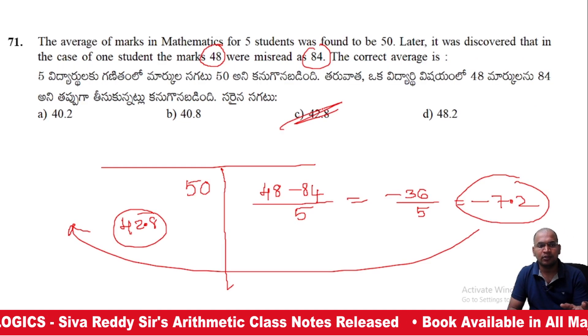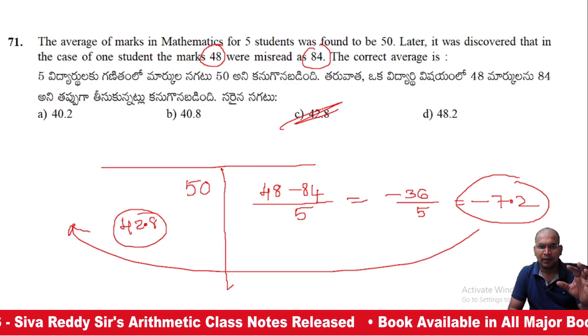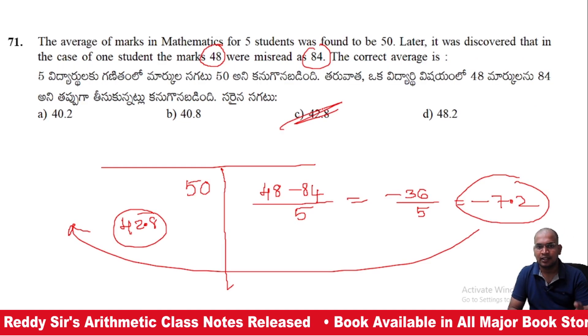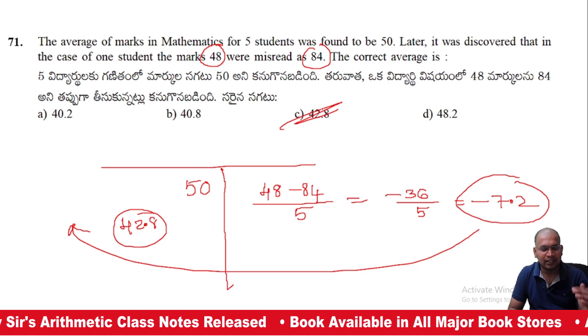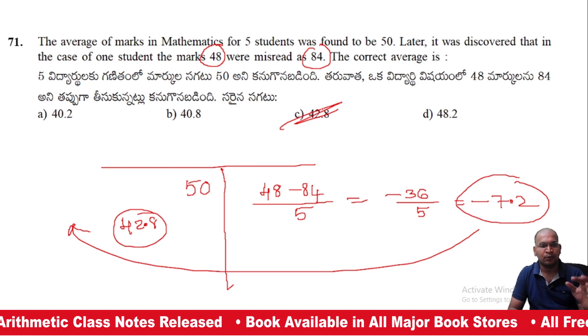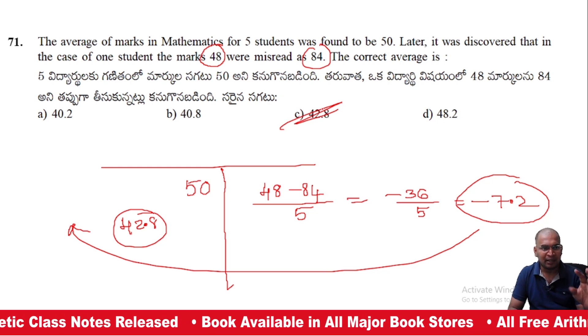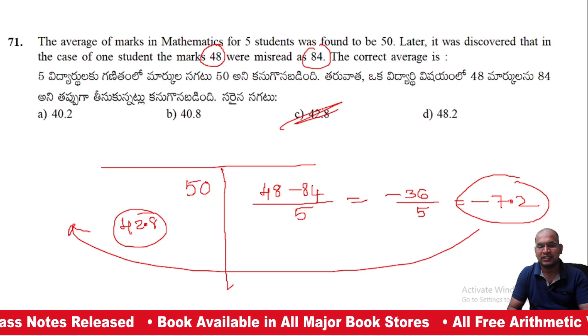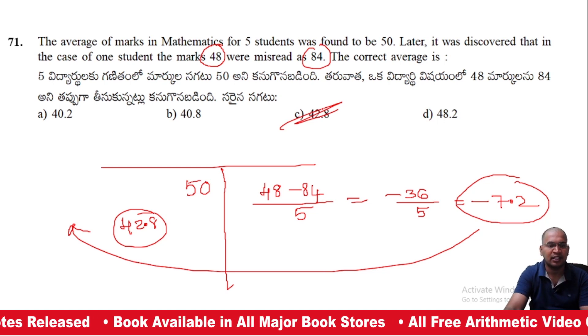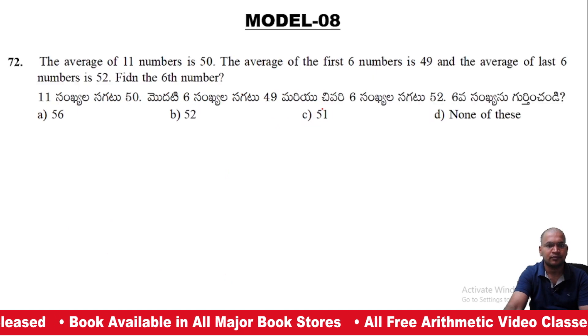This is all about Averages. Model number 6 and model number 7 — we cover each other.